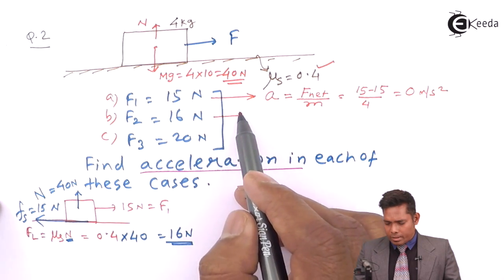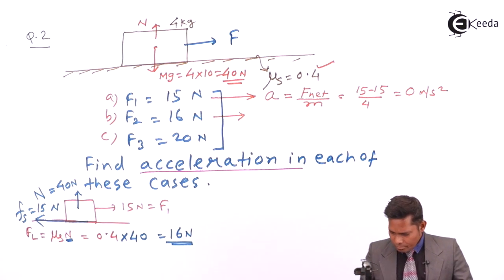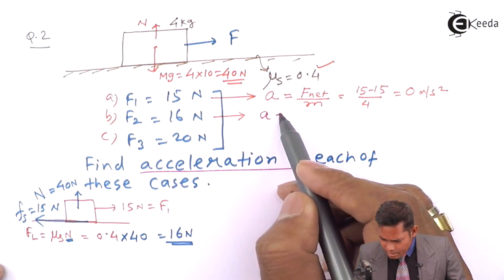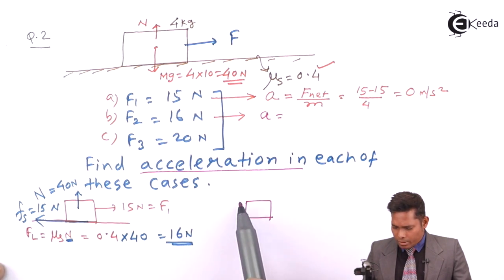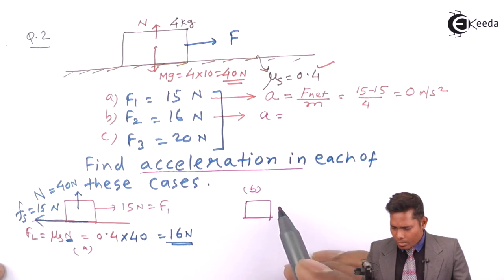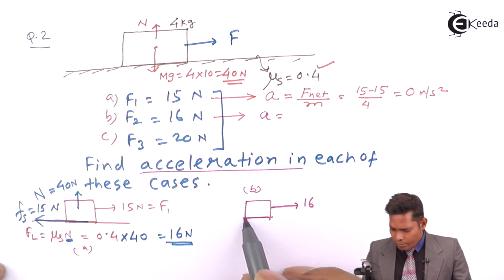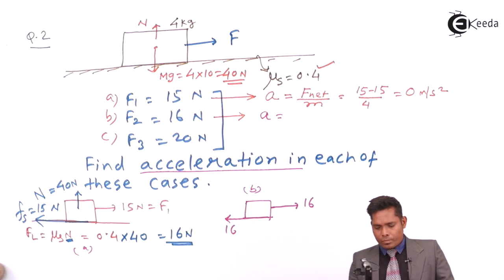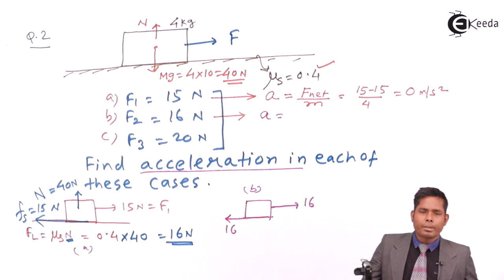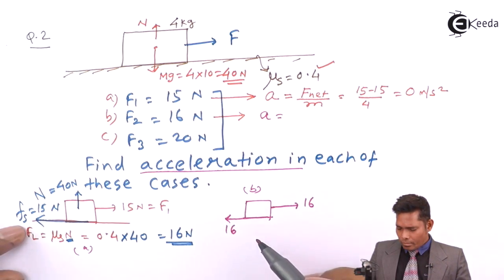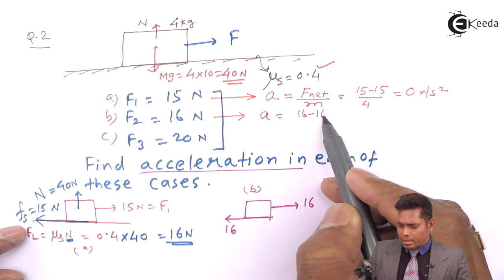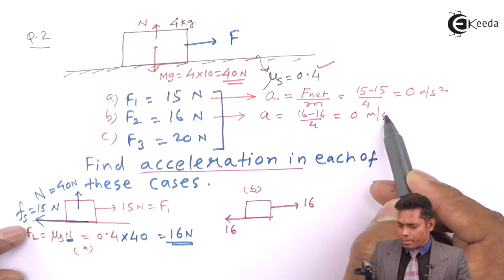Now for the second part, Case B: if the force applied is 16 N, the frictional force will also be 16 N, because the maximum value of friction is 16 N. Friction applies its maximum to keep the two bodies together. So acceleration = (16 − 16) / 4 = 0 m/s².